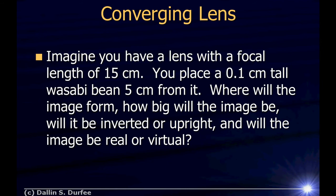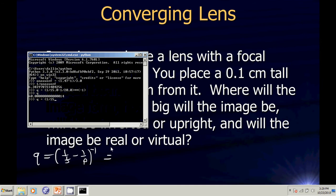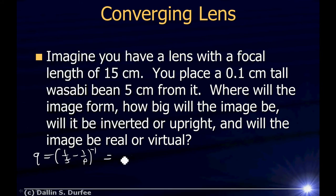Let's try another problem — the same setup but now placing the object less than one focal length away, at 5 centimeters. Q equals 1 over 15 minus 1 over 5, raised to the minus 1. Q is negative 7.5. So Q is negative, meaning the image is 7.5 centimeters on the opposite side from our eye, which for a lens is on the same side as the object.